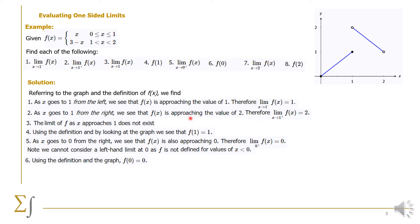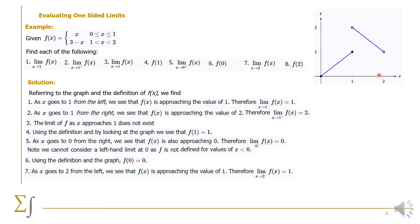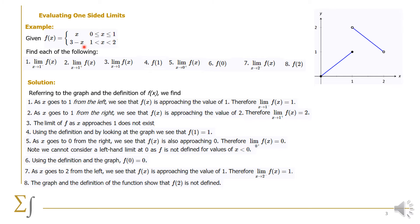For number 6, f(0): from the graph or the definition, f(0) is equal to 0. Next, we find the value as x gets closer and closer to 2 from the left. As we get closer to 2 from the left, the function gets closer and closer to the value 1. For f(2): it is not defined — 2 is not included in the domain of the function.